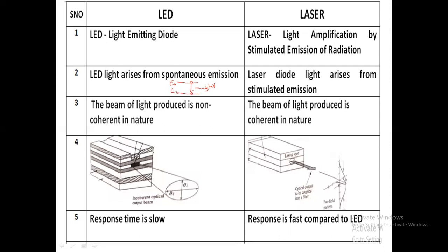Now looking at laser diodes: laser diode light arises from stimulated emission — in simple words, by forceful emission. Here also we refer to energy levels E1 and E2. E1 is the unstable state and E2 is the stable state. By natural tendency, electrons from the higher state fall to the lower one.